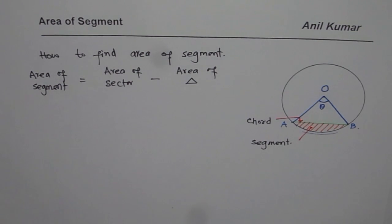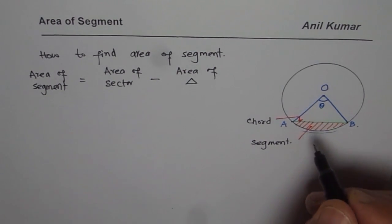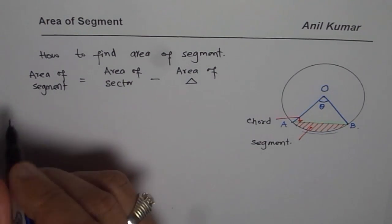So if we are given some values for radius and angle, we can easily find this. So as an example, let us take up an example now.